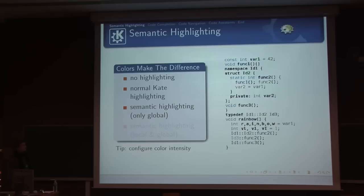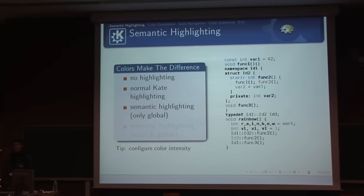The namespaces are red, the typedefs have dark green, custom types have bright green, and functions are blue. Methods from the same class are yellow, and so on. So just a quick glance at the code, you can find out what is what, and this is really neat.